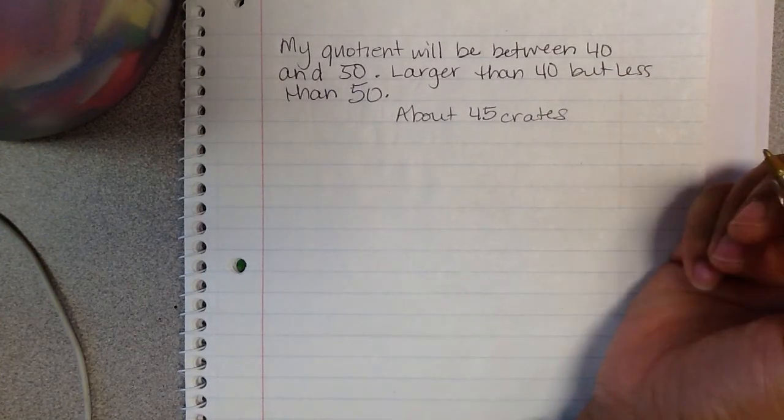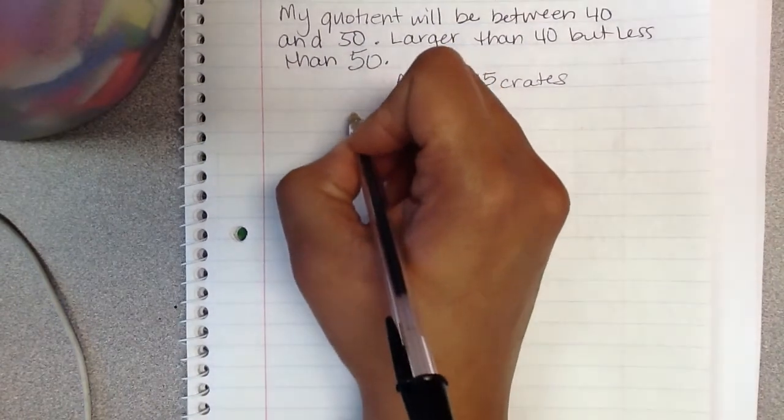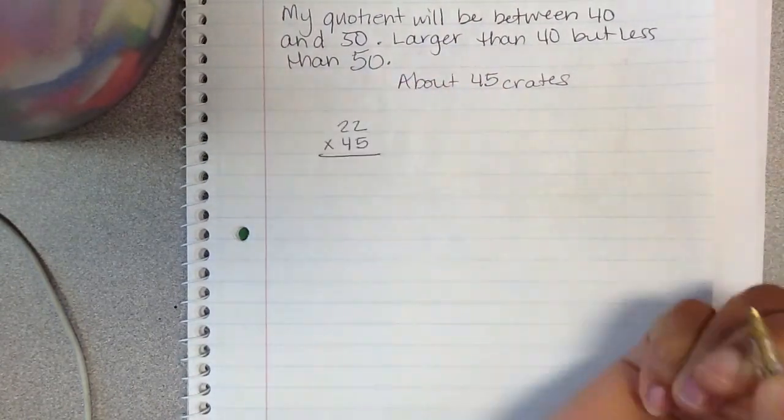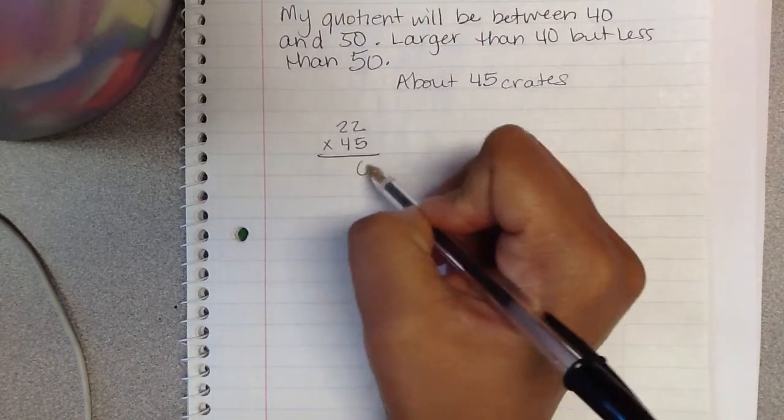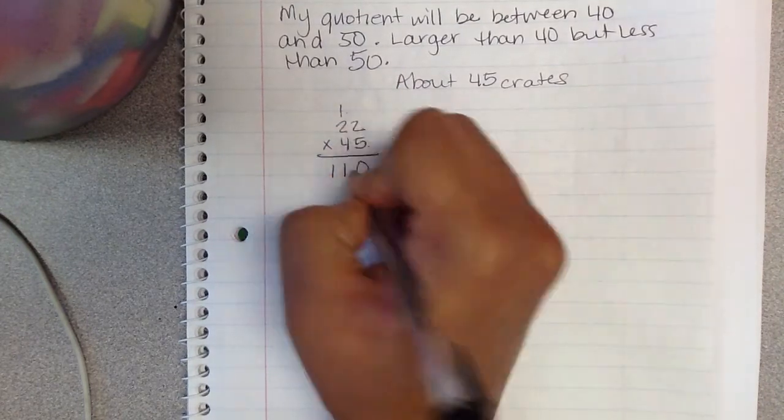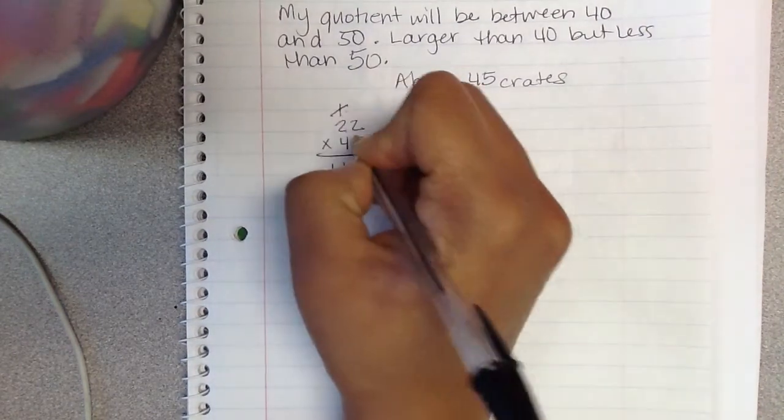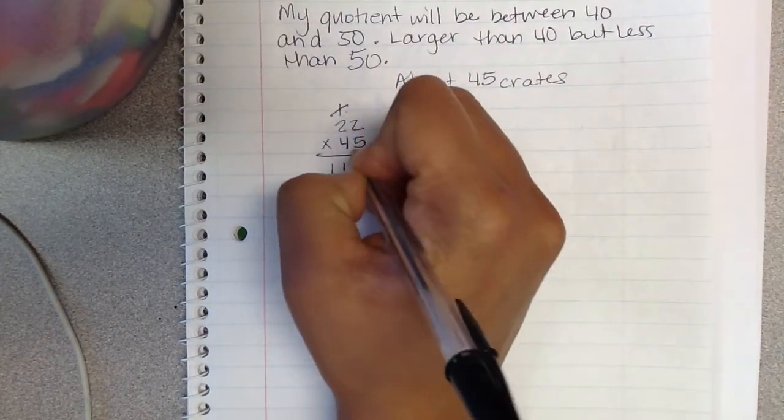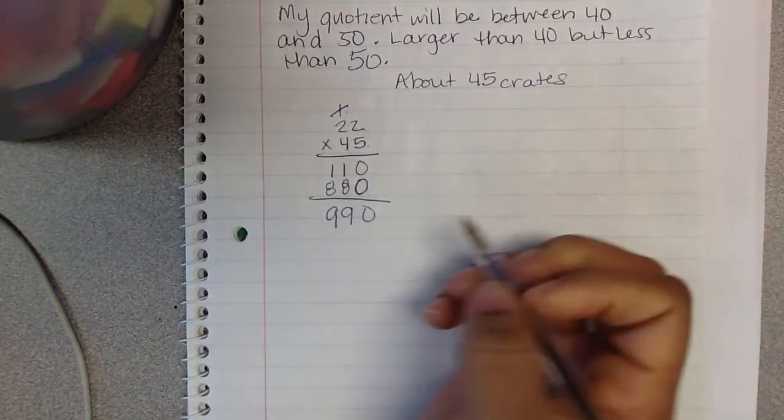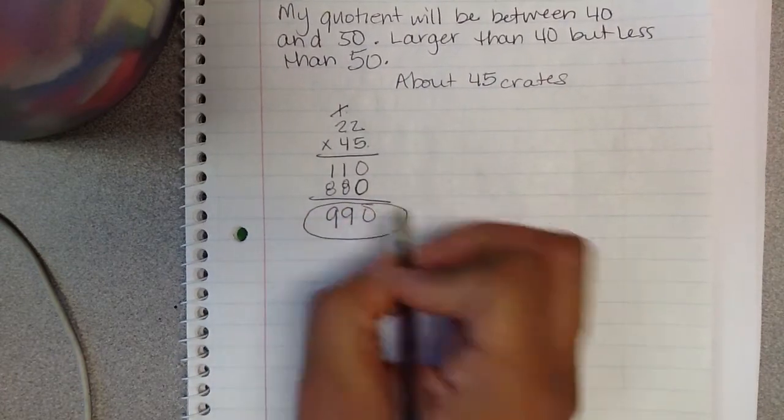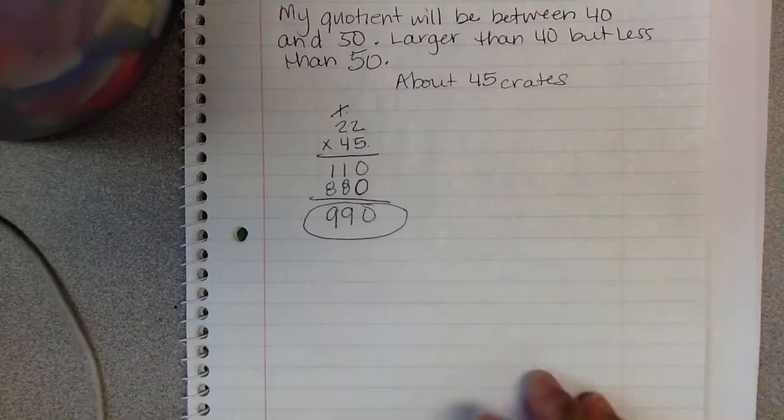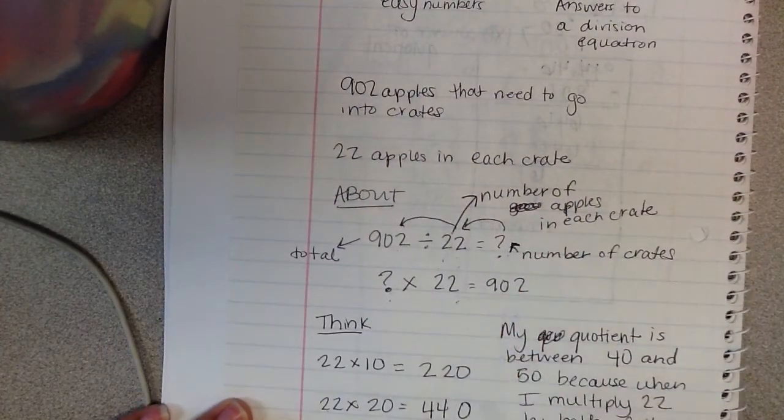And I can try that. I can try taking 22 times 45 and see what I get. 5 times 2 is 10. Carry my 1. 5 times 2 is 10. Add one more. It's 11. Put my 0 here. 4 times 2 is 8 and 4 times 2 is 8. When I add those together, I get 990. And that is a little bit over the 902 that I needed.